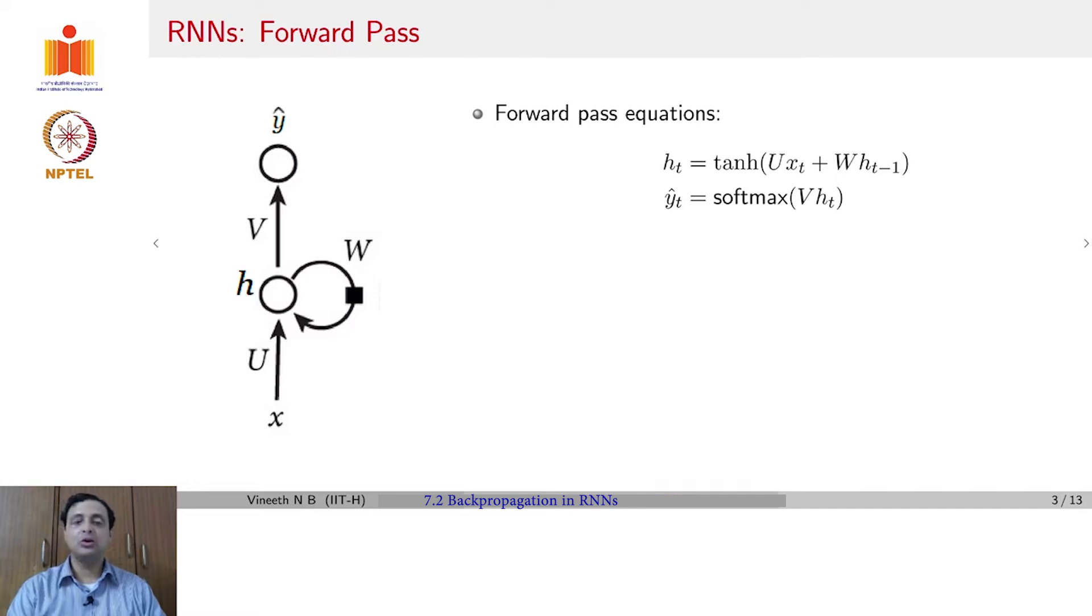And y_t hat is the softmax of v h_t. This would be your forward pass equations for an RNN that's solving a classification problem, where you have the output layer defined by a softmax. What is the cross entropy loss in this setting? You could have the standard cross entropy loss as given by this formula.